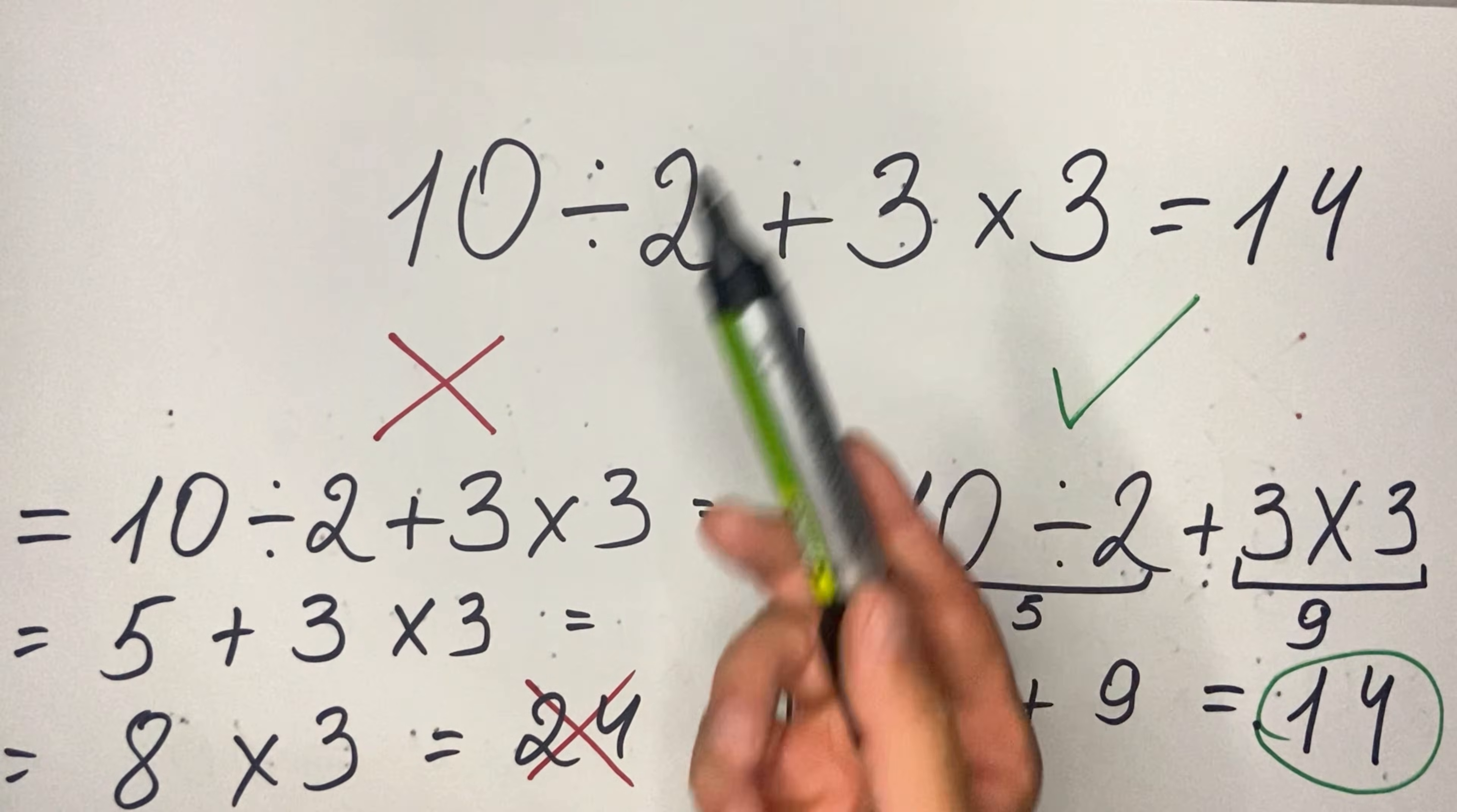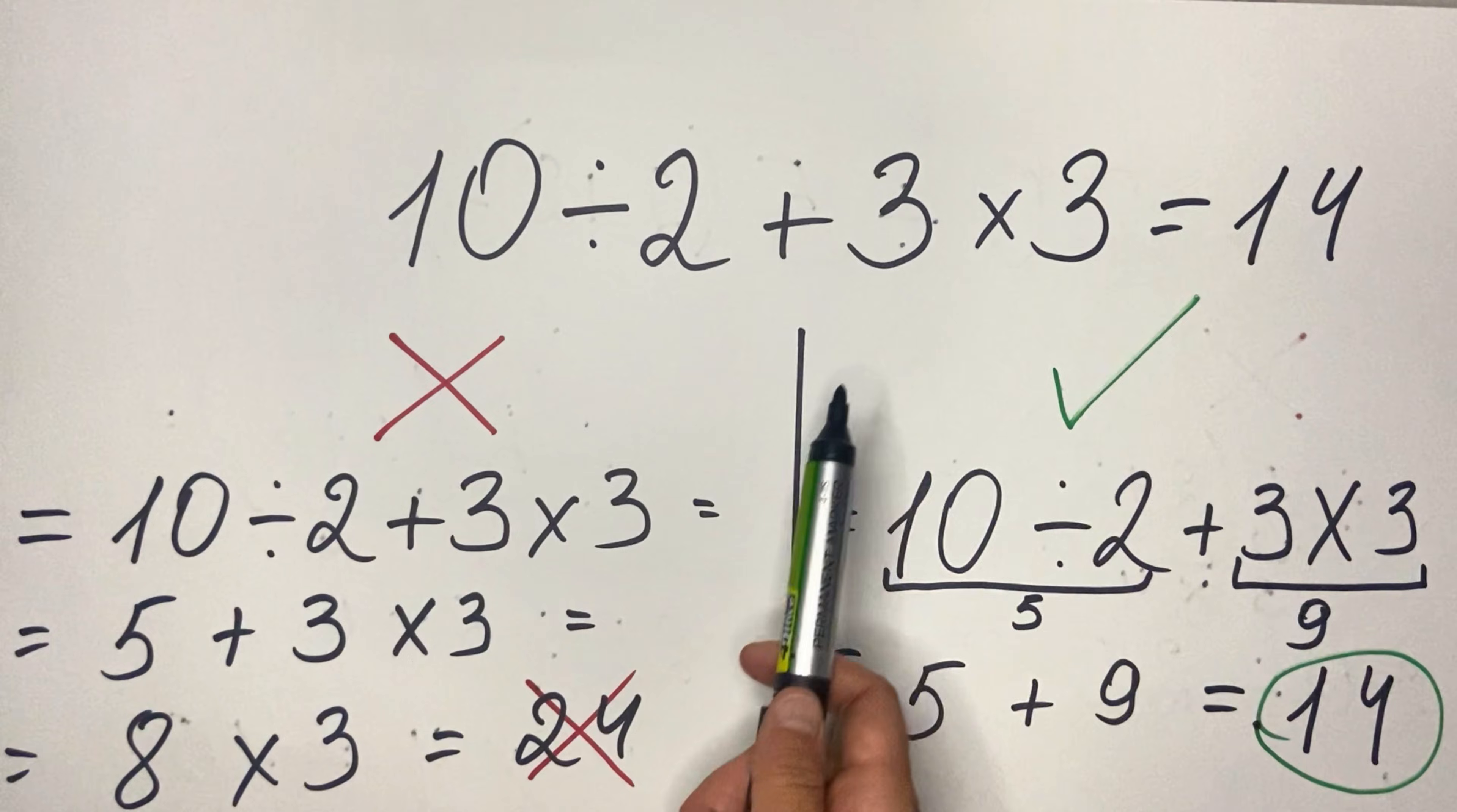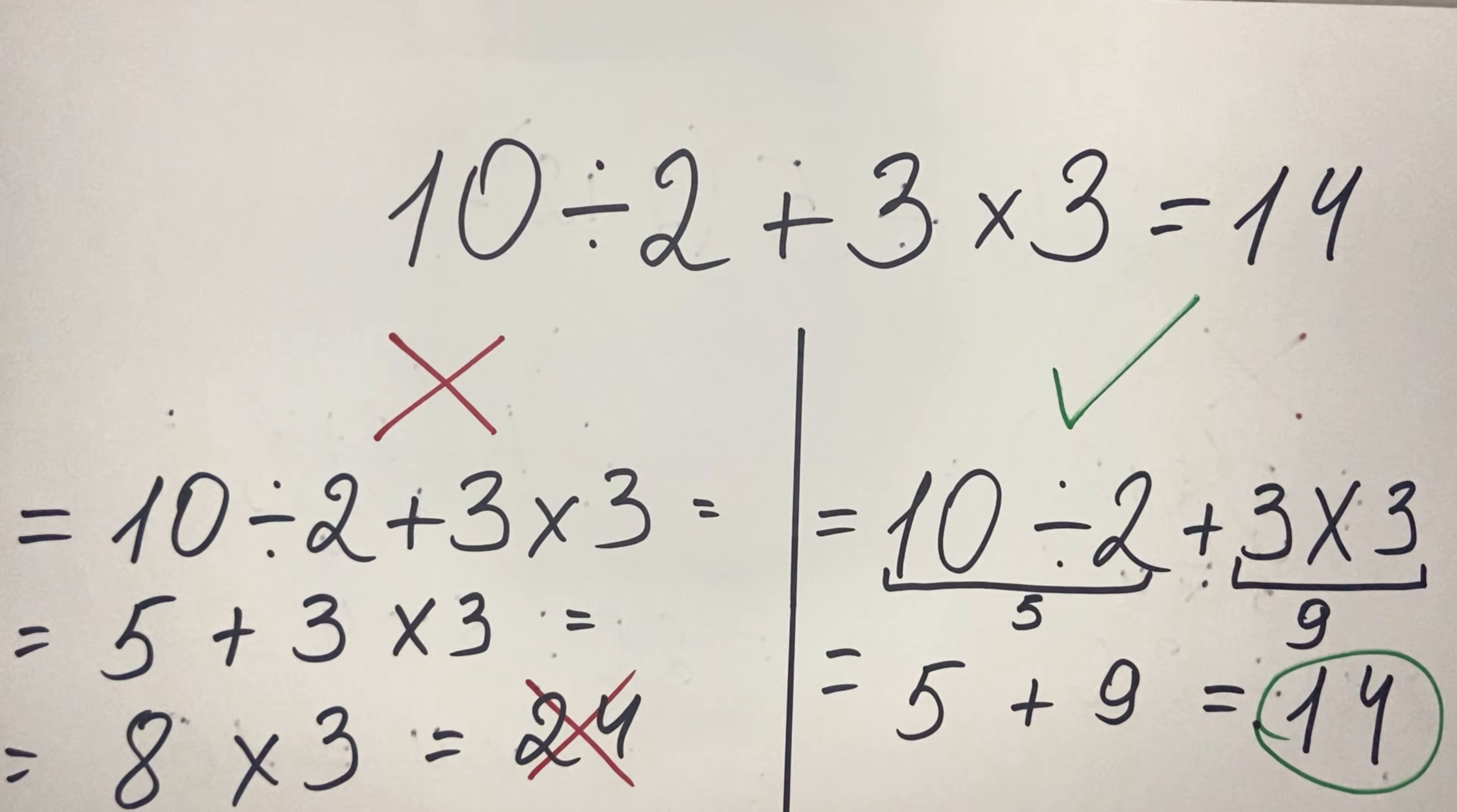To sum up, when you have this type of equation without parenthesis and you have all the numbers straightforward, first you pay attention if there's any multiplication or division. If there is, you do those first, and then you do the addition or subtraction. Thank you very much guys, hit the like button and see you in the next video.